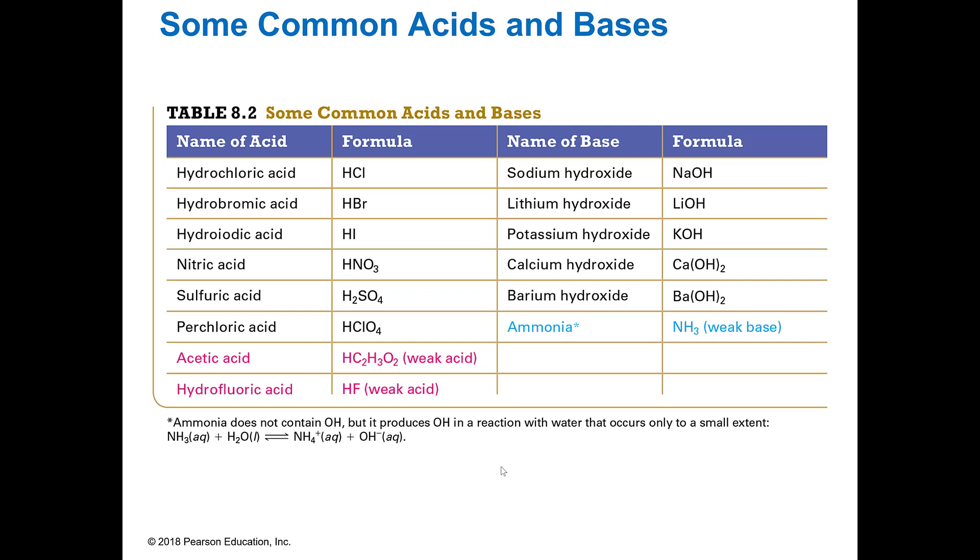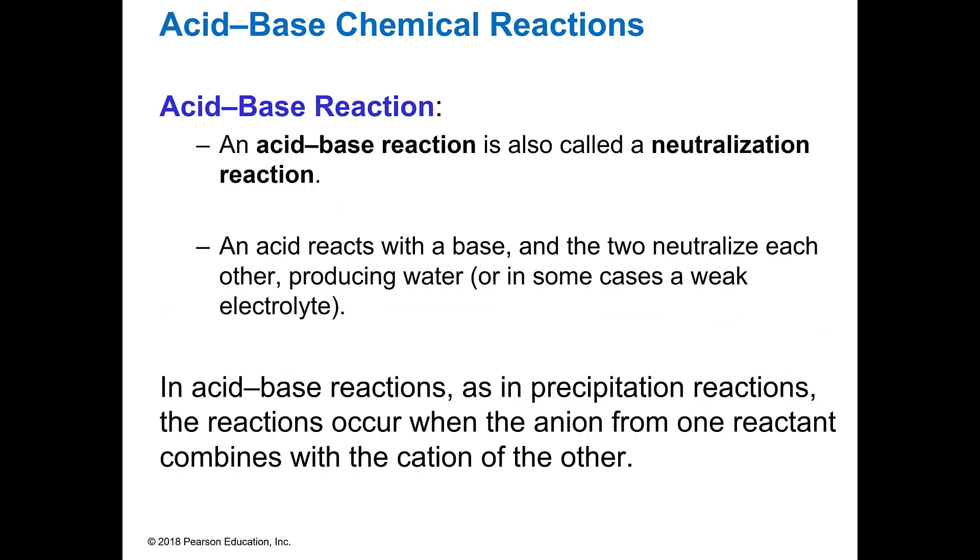This is just from the Tro book, just a list of different ones, and I just put the weak ones down here in kind of a pinky red color. Acetic acid and hydrofluoric acid are the examples of weak acids that we typically look at. Ammonia is the weak base. Pretty much what you see is the OH especially in groups 1 and 2, or 1A 2A, if you see those attached to them, those are going to be strong.